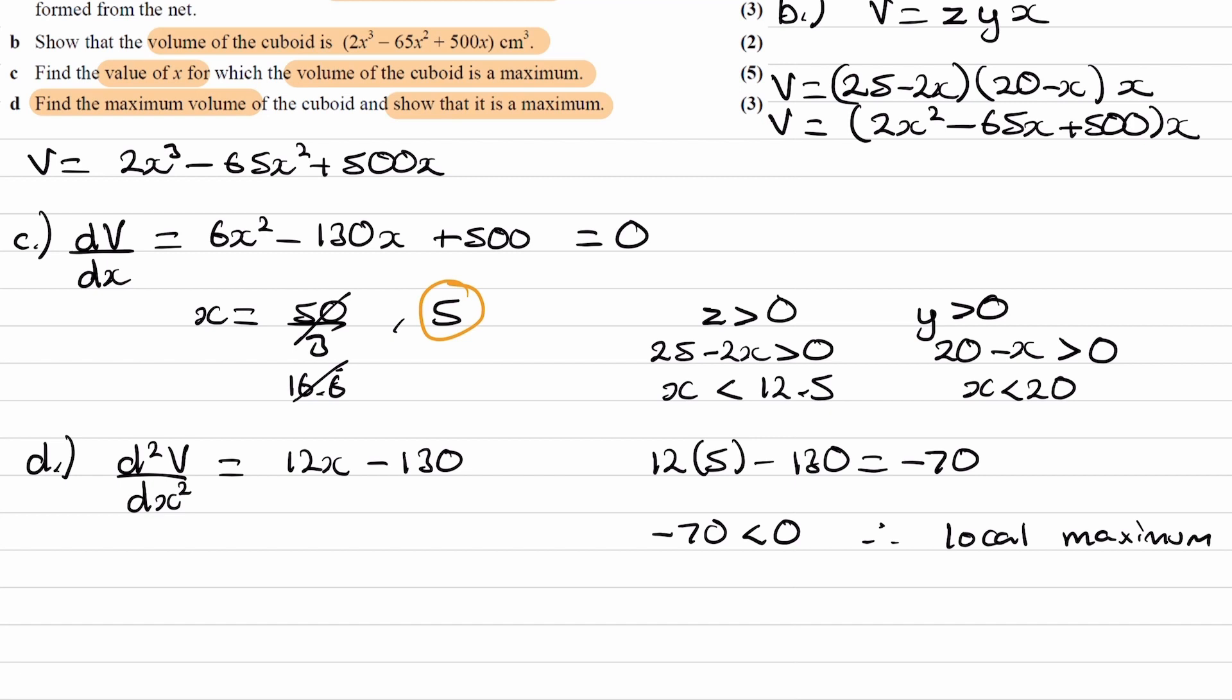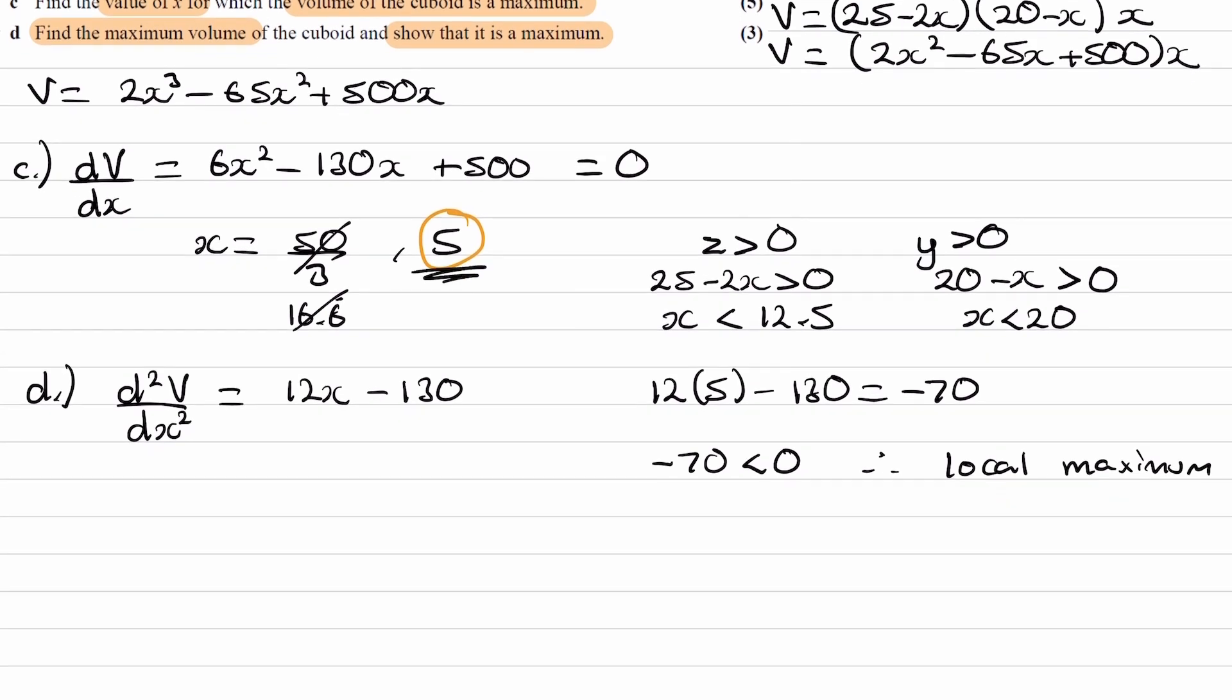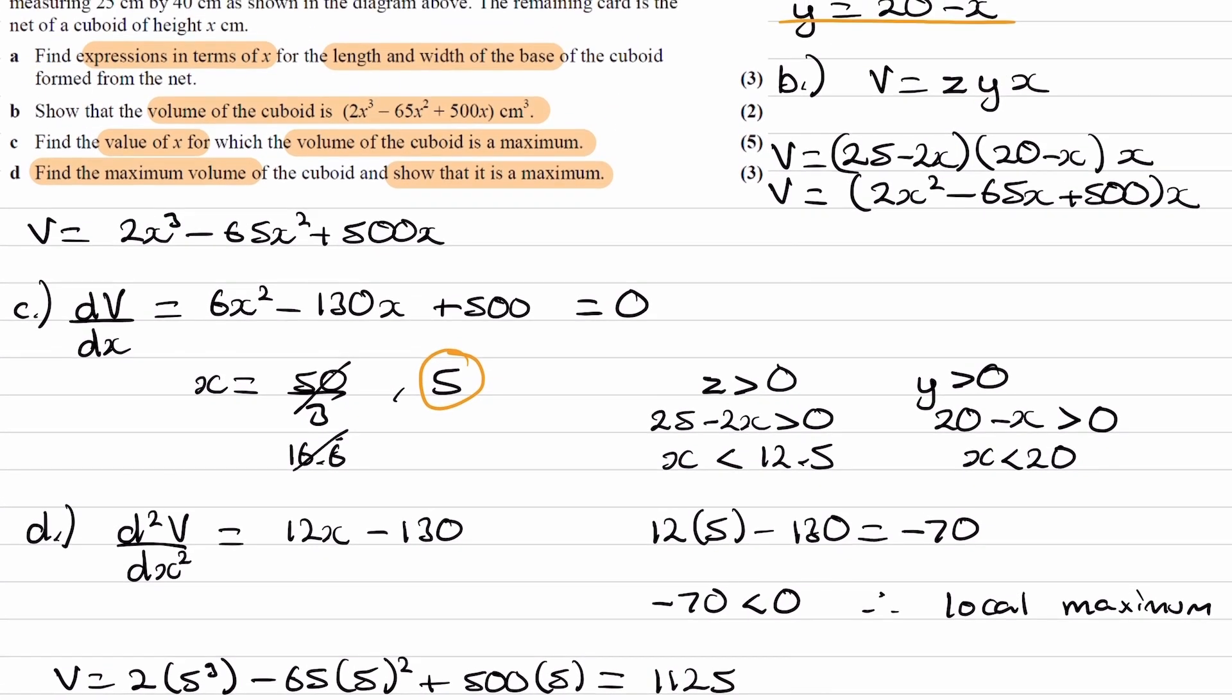And then we work out the corresponding volume. So we put in x is equal to 5 into our volume equation. So our volume then becomes 2 times 5 cubed minus 65 times 5 squared plus 500 times 5, which gives us 1125. And the units would be centimeters cubed.